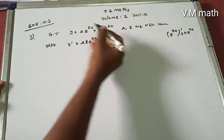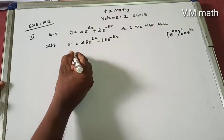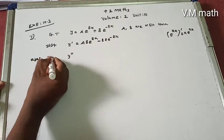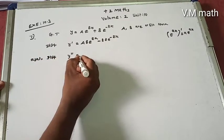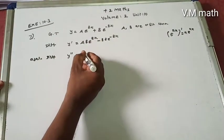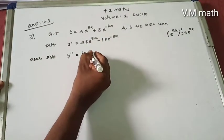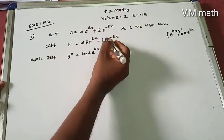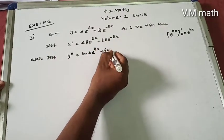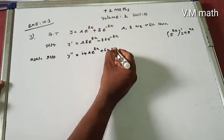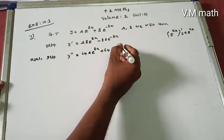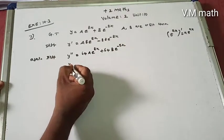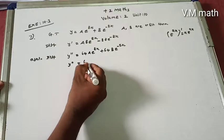Second differentiation: y double dash. Again applying that formula, we use 8, so 64 times A times e power 8x. Minus 8 times minus 8, which gives plus 64, so B times e power minus 8x.